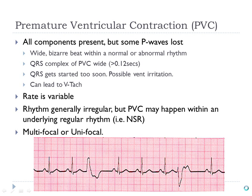PVCs are pretty easy to identify. A PVC usually lies within a fairly normal underlying rhythm — it's just a wide, bizarre-looking QRS complex. Sometimes within the same rhythm they'll look identical; sometimes they'll look different. When PVCs look the same, we call those unifocal. When PVCs within a rhythm look different, we call them multifocal.